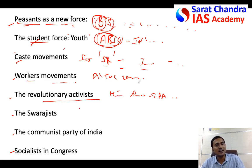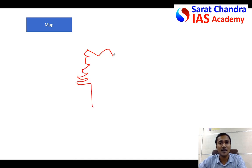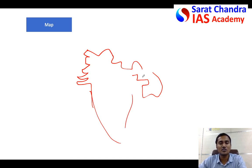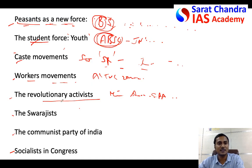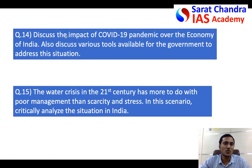Some creative people even draw a map — they will draw the map and show on it that the Chittagong revolution party is here, the Self-Respect Movement is here, the Satyashodhak activists are here, and the Bardoli Satyagraha is here. When you discuss different aspects, just draw a map and name them, creatively showing that across India different forces came into the picture. Creativity in your answers is great.